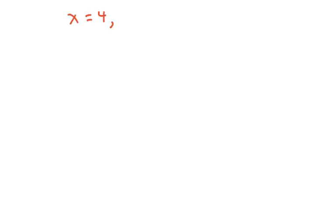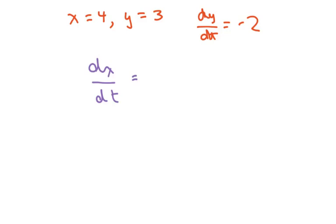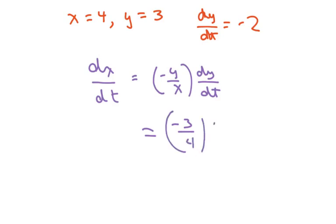The other part: when x is 4, y is 3, and dy/dt equals negative 2. So dx/dt equals negative y over x times dy/dt, which gives us negative 3 fourths times negative 2. Both negatives make it positive, and 2 goes into 4 twice, so our answer is 3 halves.